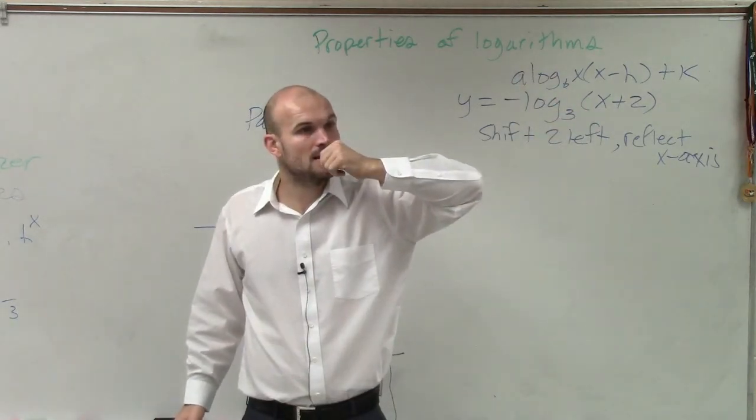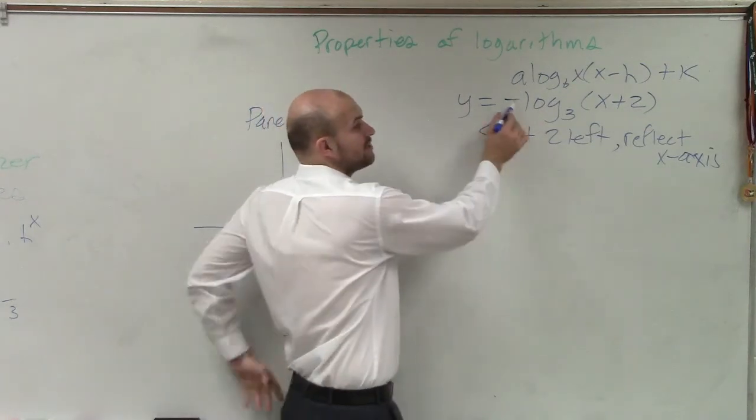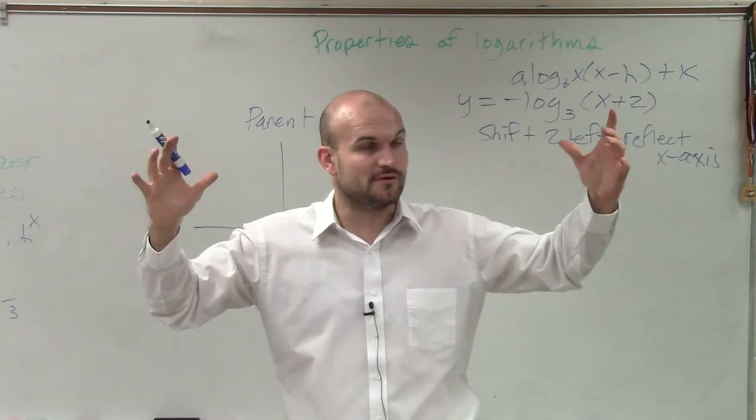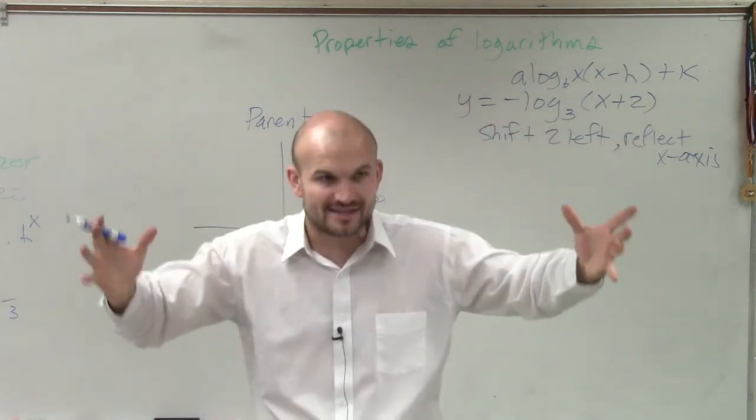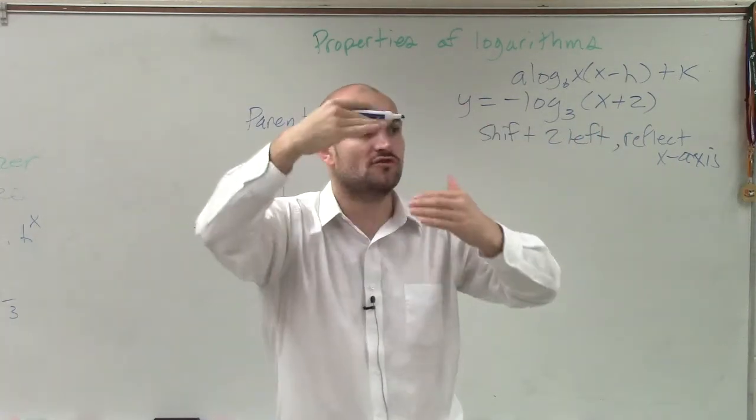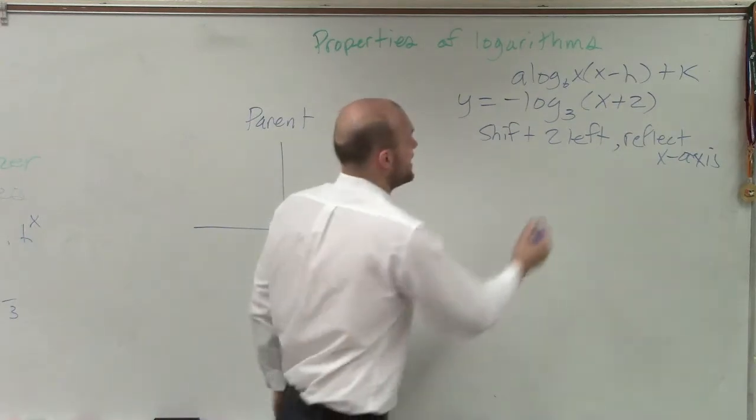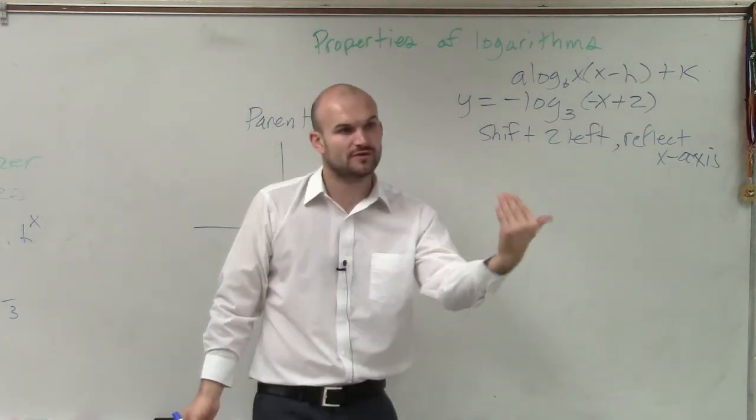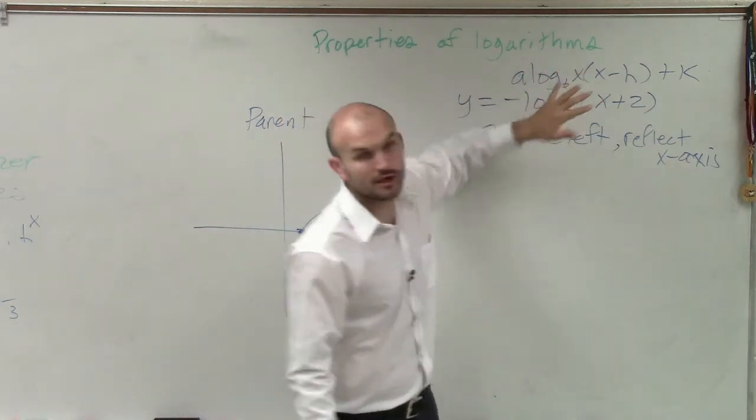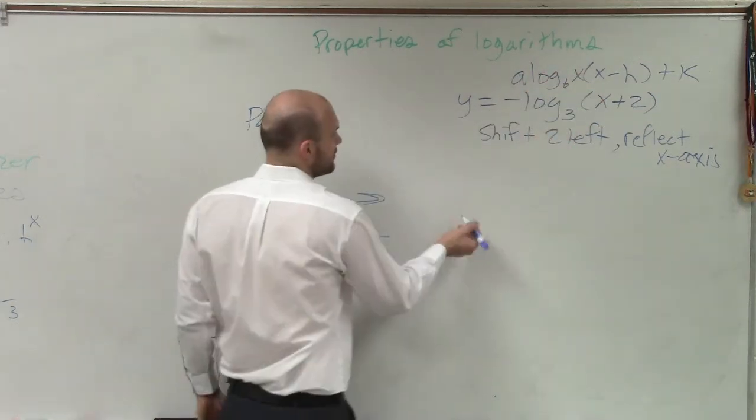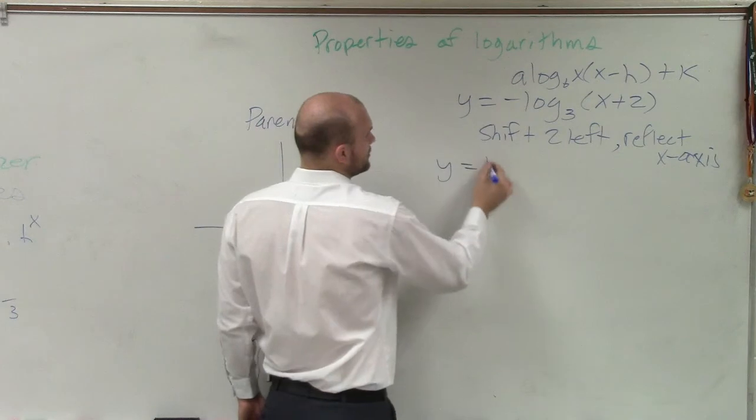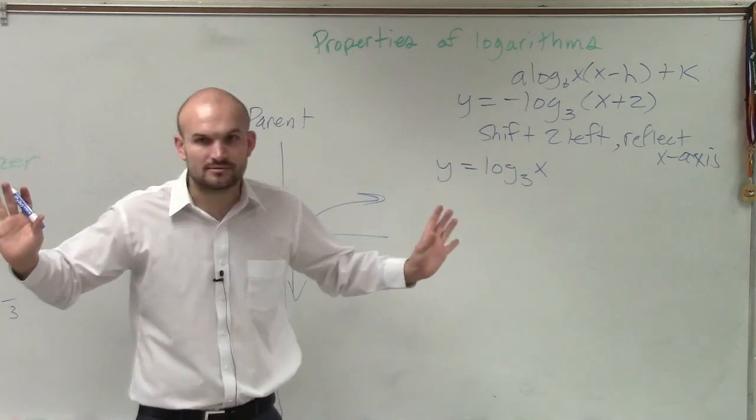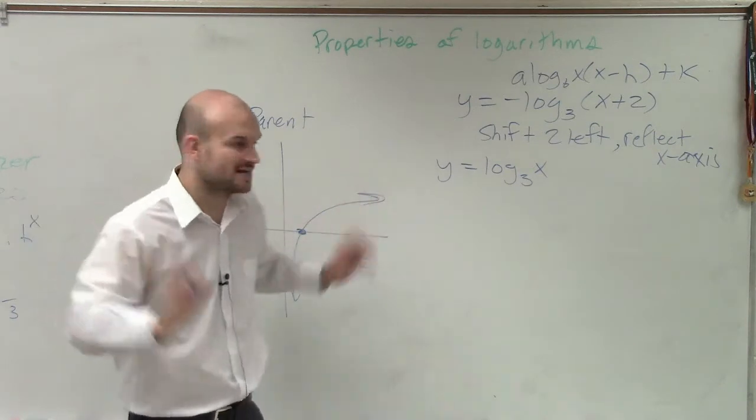Why do you reflect it because it's x-axis? If I multiply inside the function, that reflects over the y-axis. A little FYI. So let's go ahead and do a table for y equals log base 3 of x. No transformations are going on, right? Let's just do the xy table for this.